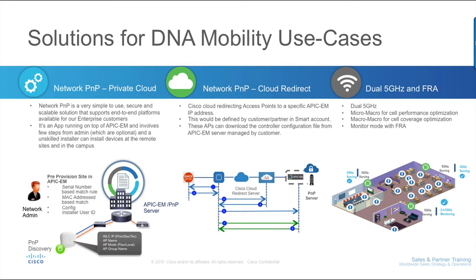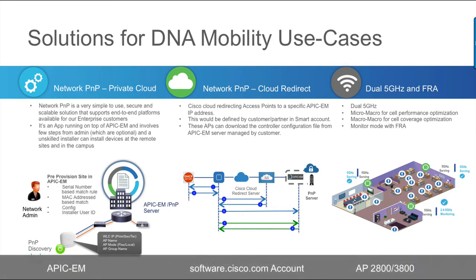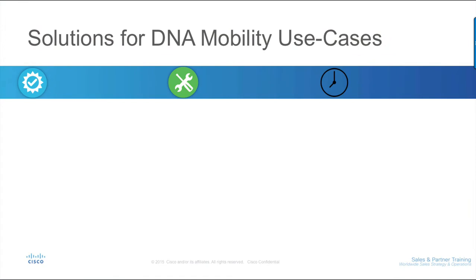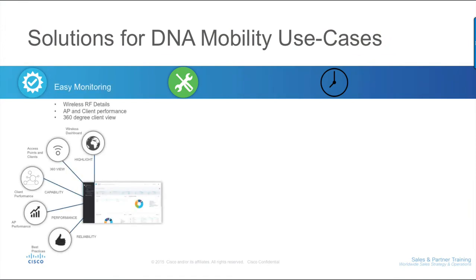Easy monitoring and real-time troubleshooting tools are natively integrated into the controller UI. The advanced dashboard allows you to view not just AP and client details, but also gives you visibility into AP and client performance with important metrics such as channel utilization, interference, client load, coverage holes, signal strength, data rate, SNR, and client failures.